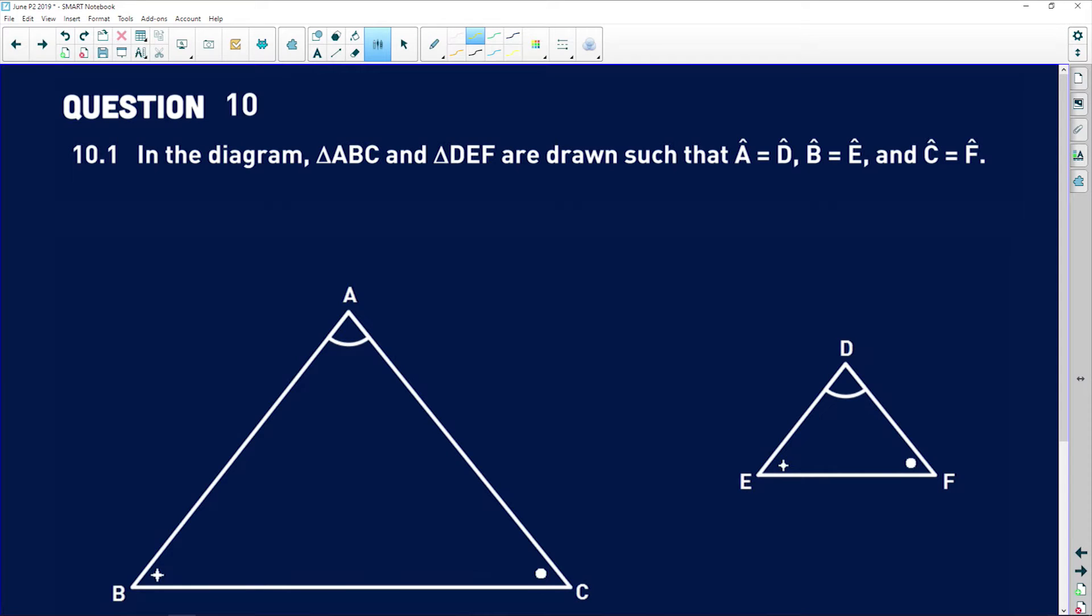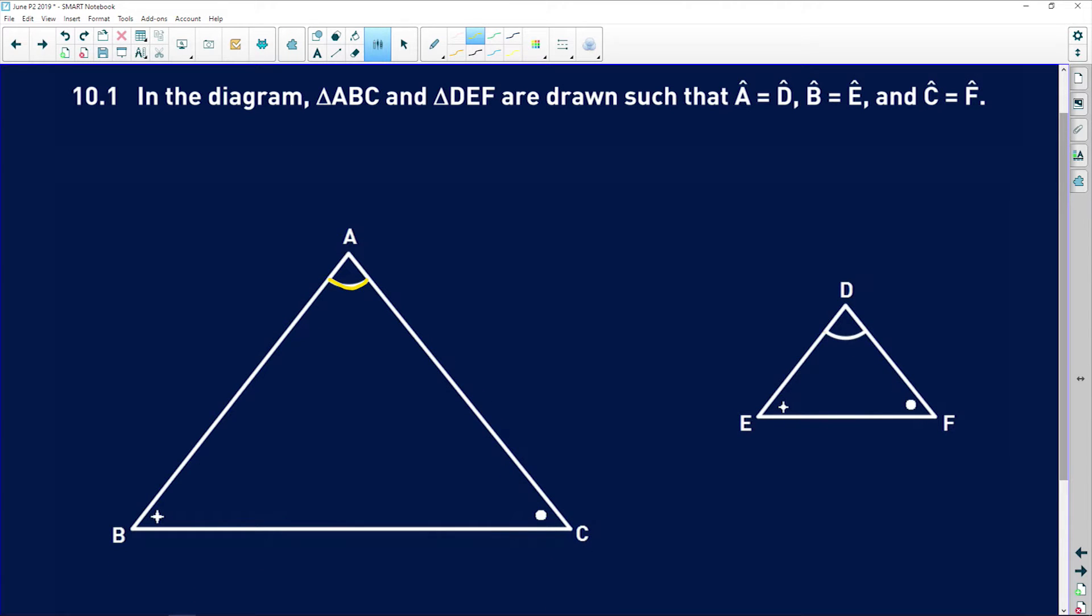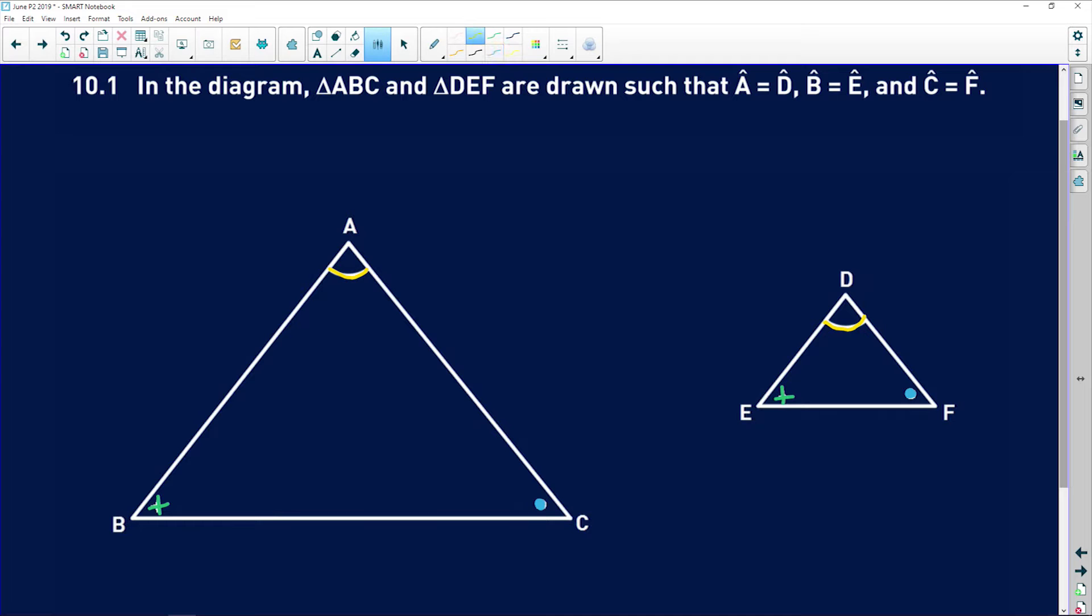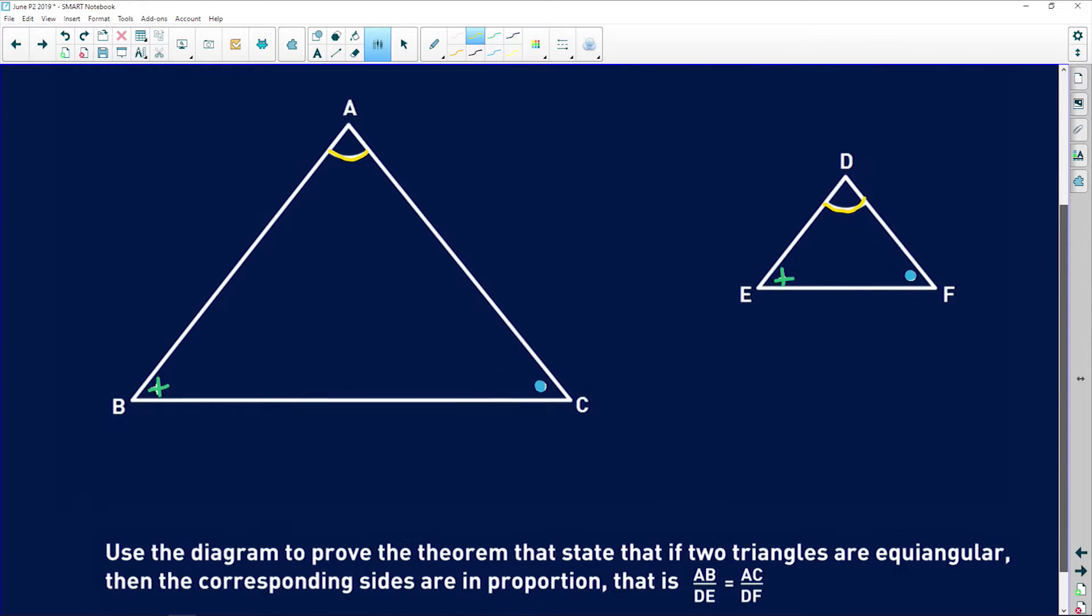It says 10.1. In the diagram triangle ABC and triangle DEF are drawn such that angle A is equal to angle D, angle B is equal to angle E, and angle C is equal to angle F. So we already know that these triangles are similar, but we need to prove various relationships.